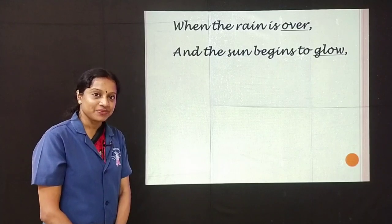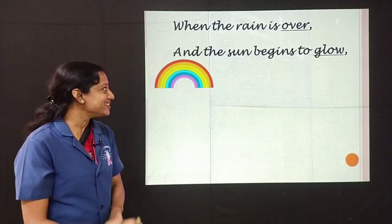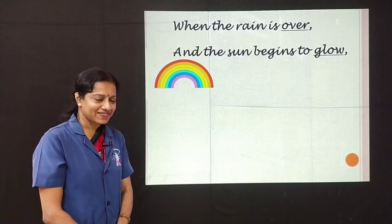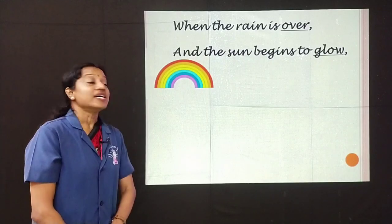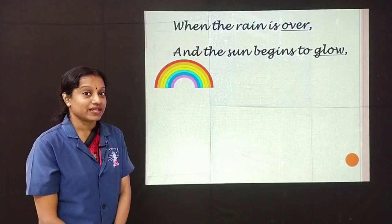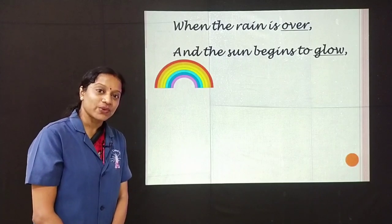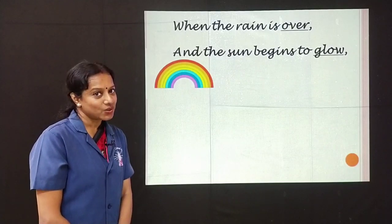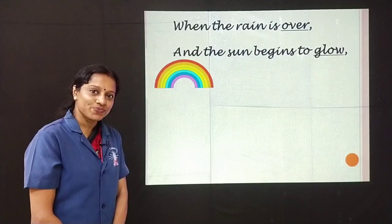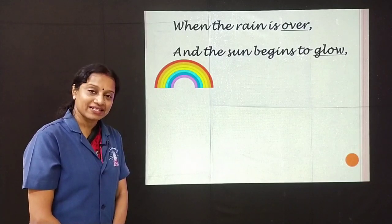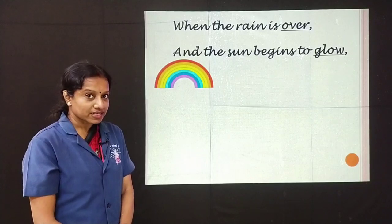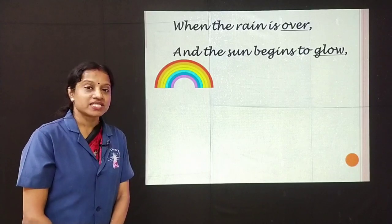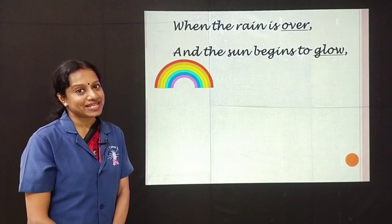Sometimes at that time you see a beautiful rainbow. Have you ever seen a rainbow? You must have seen it. There are seven colors in a rainbow. They are red, orange, yellow, green, blue, indigo, and violet. Violet is a shade of purple, and indigo is a mix of purple and blue.